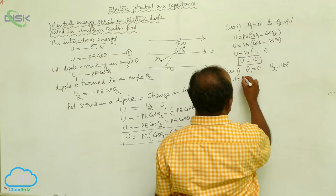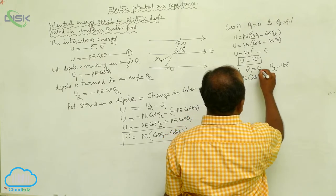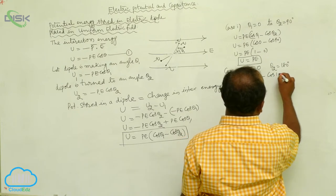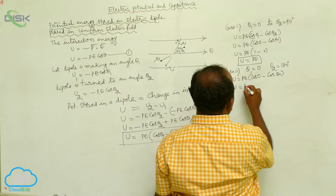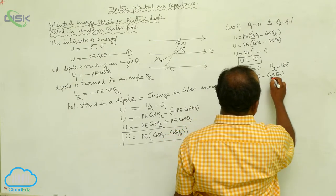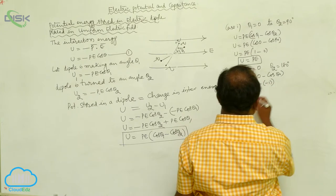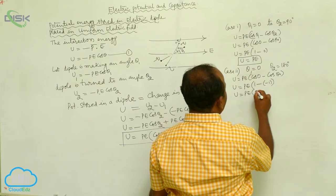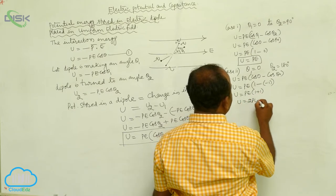Therefore, U = Pe(cosθ₁ − cosθ₂) = Pe(cos0° − cos180°) = Pe(1 − (−1)) = Pe(1 + 1). Therefore U = 2Pe.